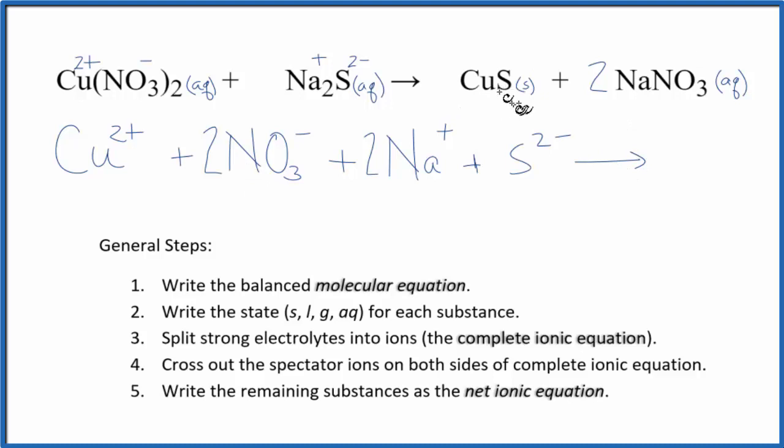CuS, this is copper 2 sulfide, is a solid. So it's sitting at the bottom of the test tube. We're not going to split this apart. Net ionic equations, we don't split solids apart. So we're just going to write CuS, that would be the solid.